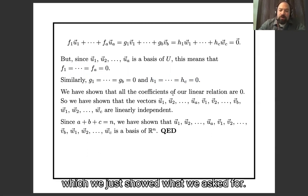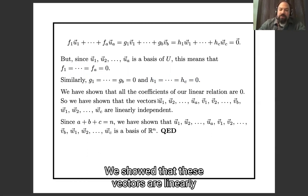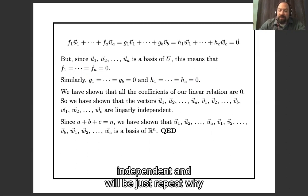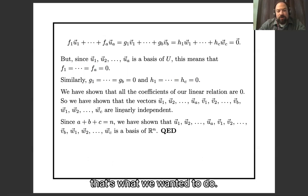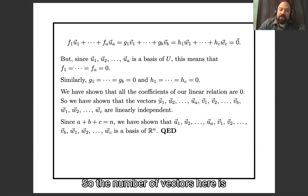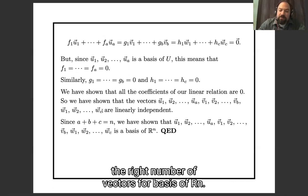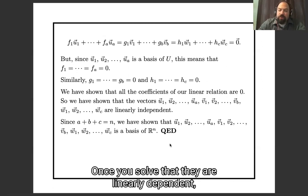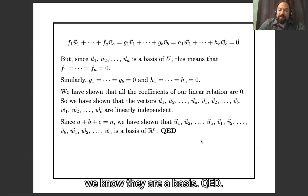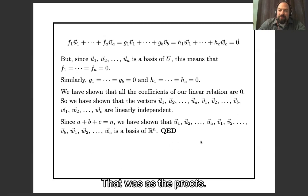We have shown that every single coefficient in our linear relation is zero, which means we showed that these vectors are linearly independent. Since a plus b plus c equals n, the number of vectors is exactly the right number for a basis of R^n, and linear independence gives us a basis. QED. That was the proofs. Hope you enjoyed.